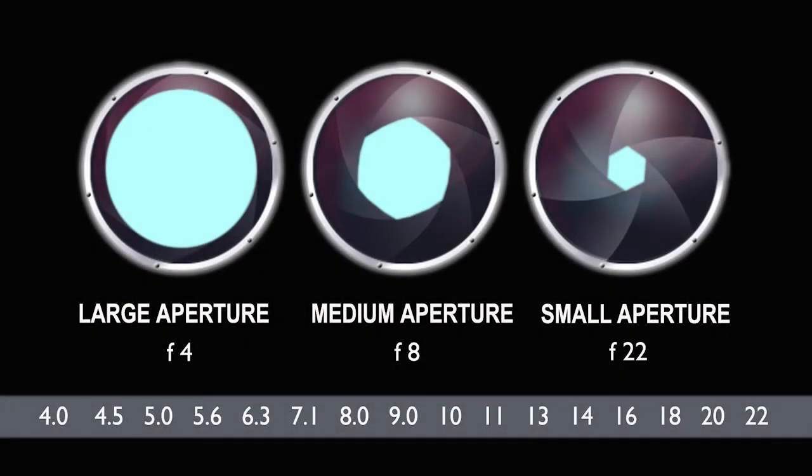Confusingly, the larger the f-stop number, the smaller the diameter and the less light is let into the camera. The smaller the f-stop, the larger the diameter and the more light is let in.